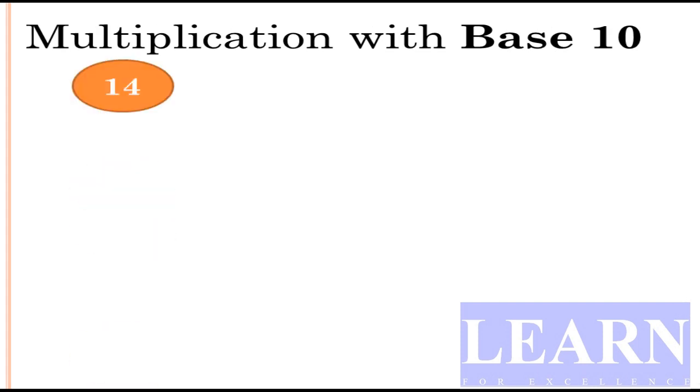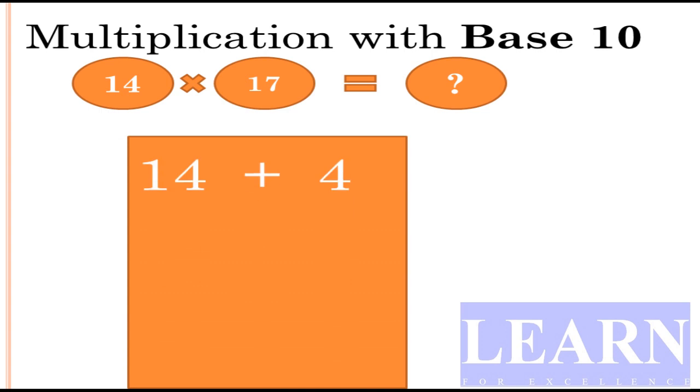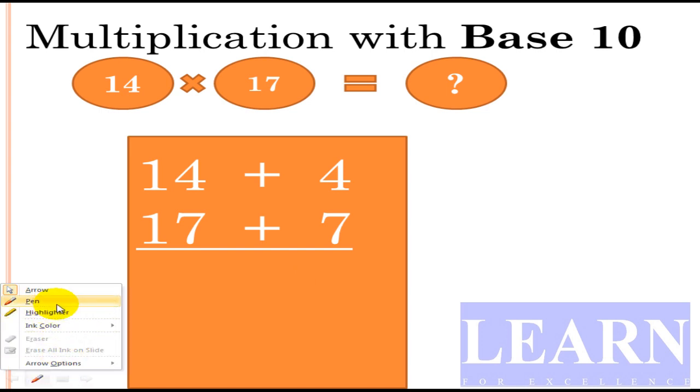First, we'll start with base 10. I'll take two numbers: 14 and 17. Now you have to write these two numbers in a specific format. Write 14 as 14 + 4 and 17 as 17 + 7. Now you may have one doubt: how did we get this 4 and how did we get this 7? Look here, we have taken base 10, so 14 is 4 more than 10, and 17 is 7 more than 10.